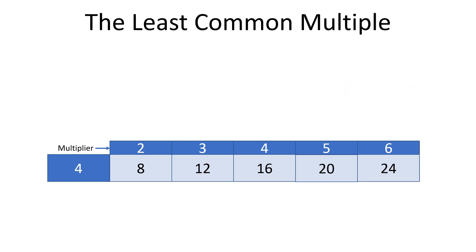To find a common denominator, we have to find what is known as the least common multiple. In our example, we have one fraction with 6 in the denominator and the other fraction has 4 in the denominator.